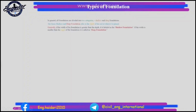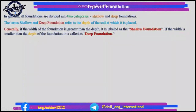Types of foundation: in general, all foundations are divided into two categories — shallow and deep foundations. The terms shallow and deep refer to the depth of the soil at which the foundation is placed. Generally, if the width of the foundation is greater than the depth, it is labeled as shallow foundation. If the width is smaller than the depth, it is called deep foundation.